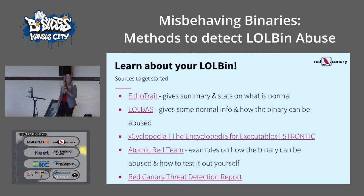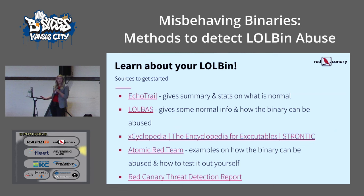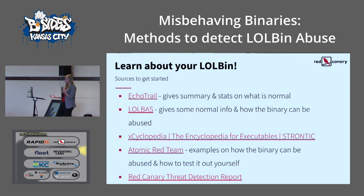LOLBAS and the Strontic Encyclopedia for Executables both give good examples of normal behavior and detection logic for what's kind of weird — like if it's proxying execution, what that looks like and some detection logic ideas. Atomic Red Team is great for showing how a binary can be abused and how to test in your own environment. The Red Canary Threat Detection Report also lists the binaries and shows what malware families use them.